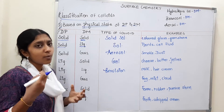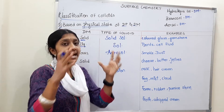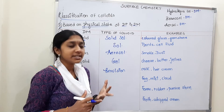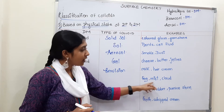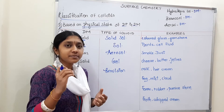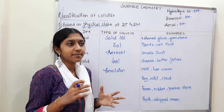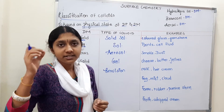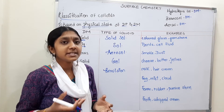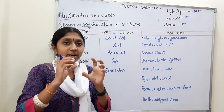Sixth type: liquid is the dispersed phase and gas is the dispersion medium. Examples include water droplets in gas — fog, mist, and cloud. These are examples of liquid-in-gas colloids seen in early morning winter conditions.